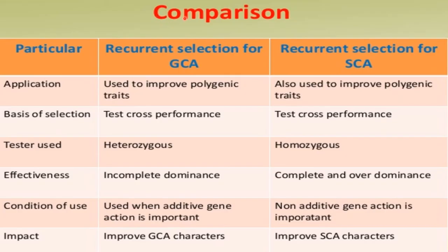Comparison between general combining ability and specific combining ability: the application is the same because both are used to improve polygenic traits. In terms of basis of selection, both are evaluated by test cross performance. The tester used in general combining ability is heterozygous, whereas in specific combining ability a homozygous tester is used.